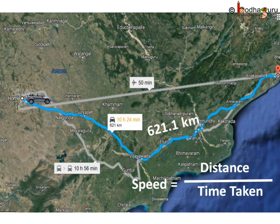So when we are calculating average speed, we would consider the total distance covered. Like I drove 621.1 kilometers to reach Visakhapatnam from Hyderabad and it took 11 hours. So my average speed was 621.1 divided by 11, which is equal to 56.46 kilometer per hour.